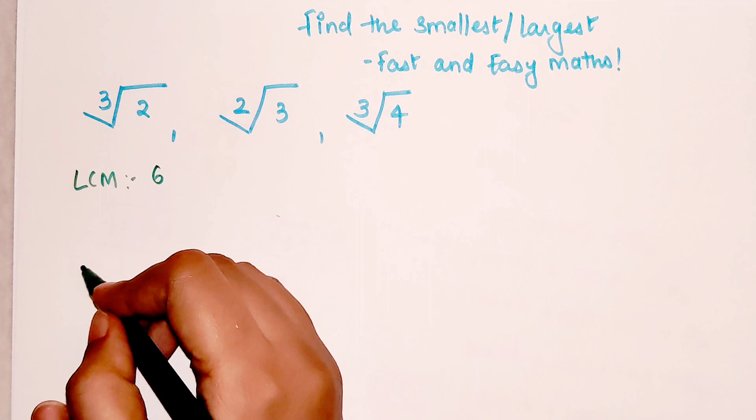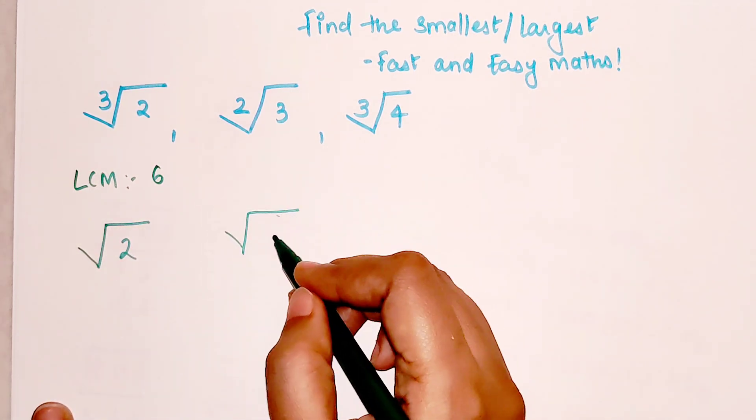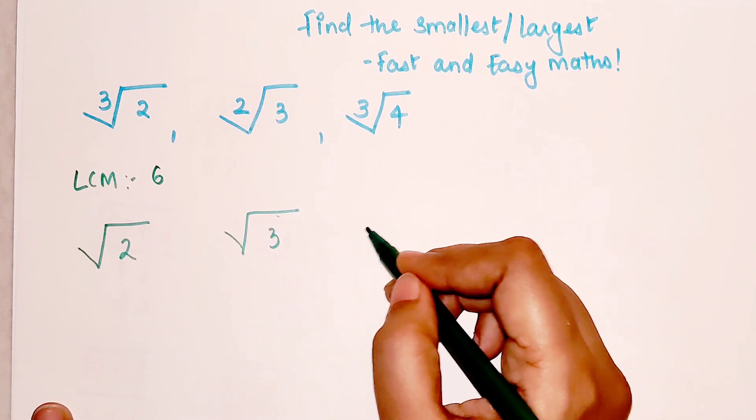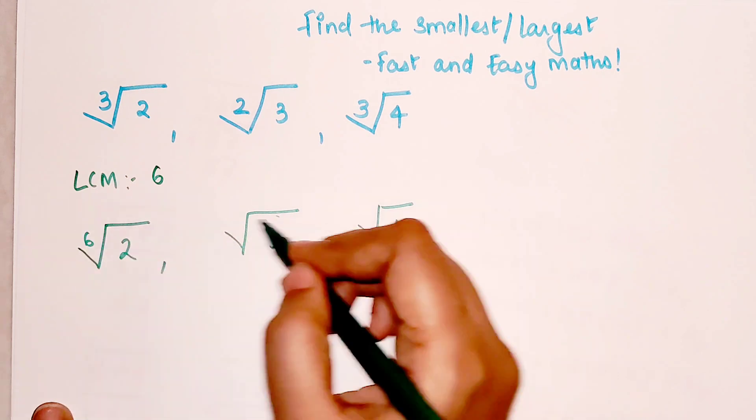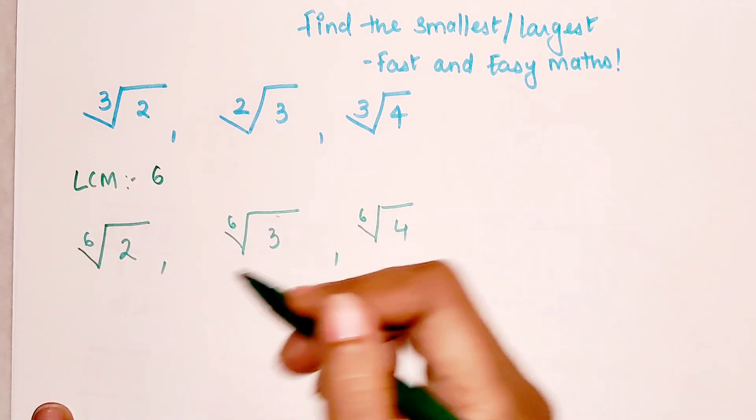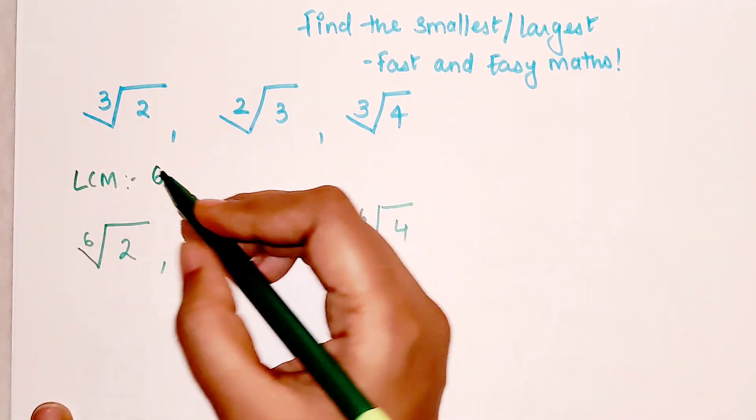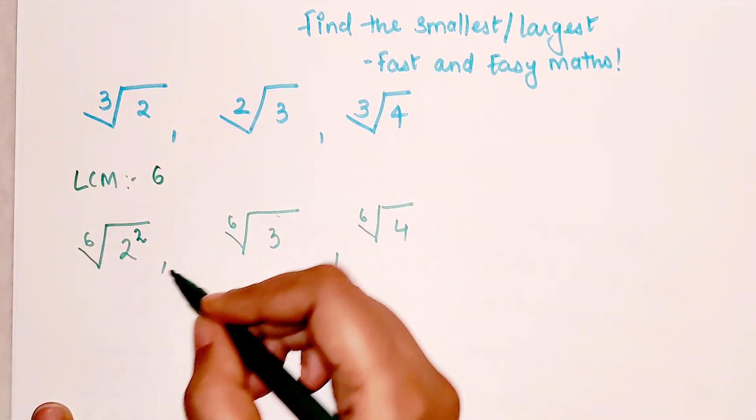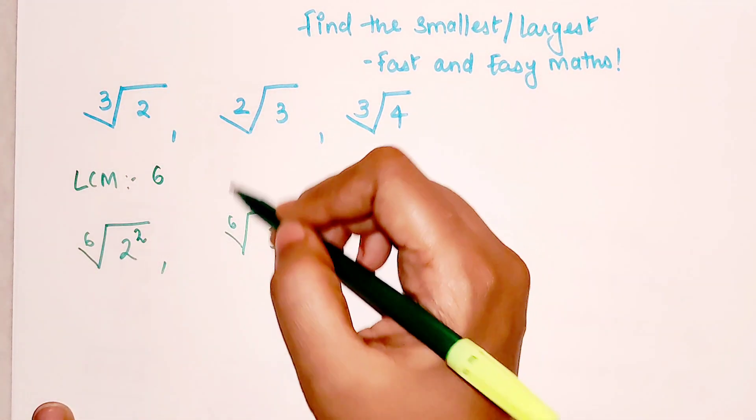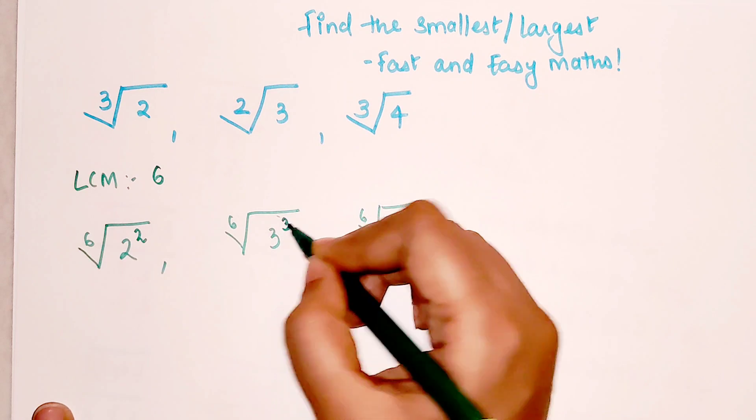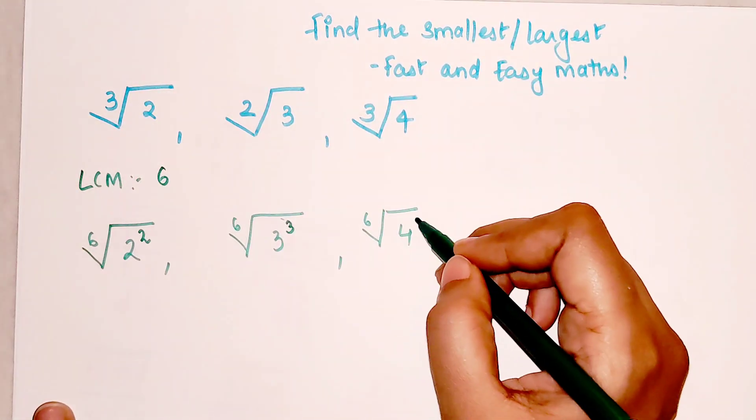So first very important thing is we are going to write all of these with the 6th root. Now when you divide 6 by 3, how much is left is 2. So you will give that 2 as the power. Here when you divide 6 by 2, the 3 comes as an index. Again 6 divided by 3 gets you 2.